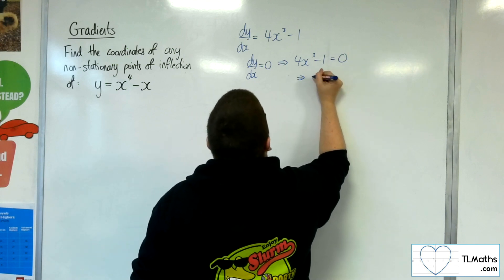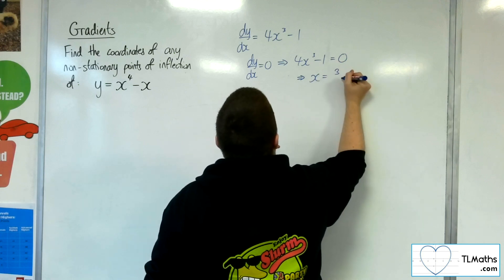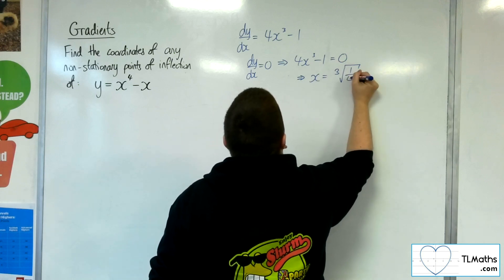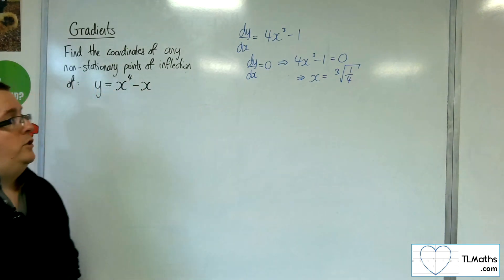So we're going to get x cubed is 1 quarter, so x is the cube root of a quarter. That is the only stationary point.